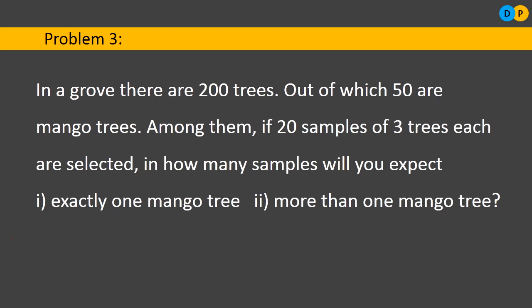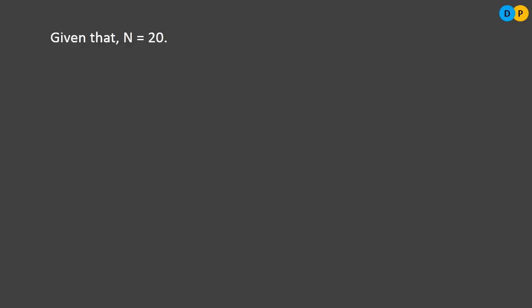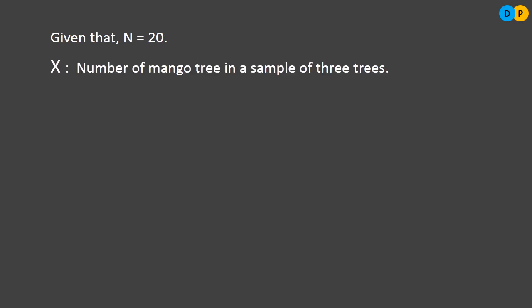Let X be the random variable indicating the number of mango trees in a sample of 3 trees. X can take values 0, 1, 2, or 3. X behaves like a binomial variate with small n = 3 (sample size) and capital N = 20 (number of samples, i.e., population-level count).